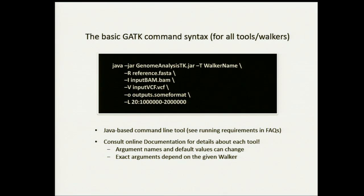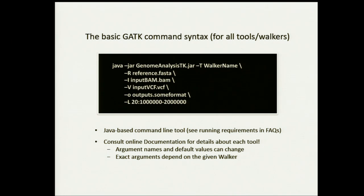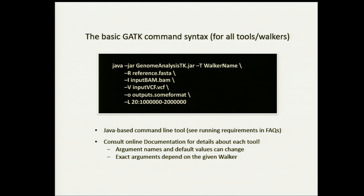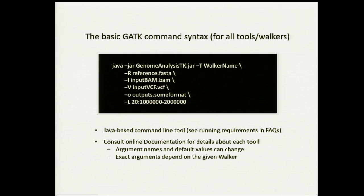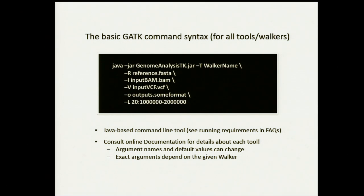This is a basic GATK command line. The GATK is a Java command line and it uses a GATK jar file. Then we tell the engine what type of tool we want to use — it can be any one of the tools in the GATK. Then we specify the reference genome. These two parameters — the tool and the reference — are required in any GATK command line. Then based on the tool you want to work with, you have different inputs. If you work on BAM files, you specify which BAM file you want, and this argument can also be a list of BAM files.